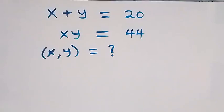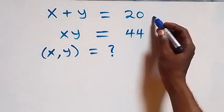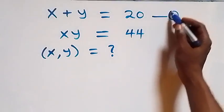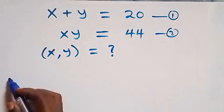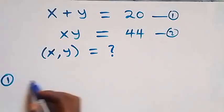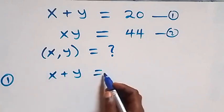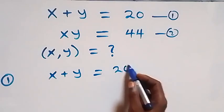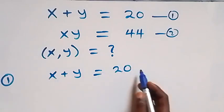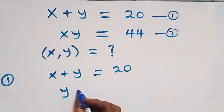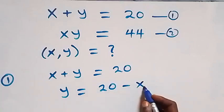Hello, you're welcome. How to solve this nice system of equations. Let this be equation one and this will be equation two. From equation one we have x plus y equals to 20. Making y the subject and taking x to this side, this becomes y equals to 20 minus x.